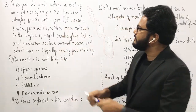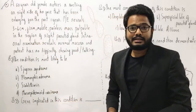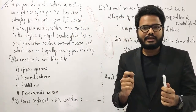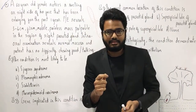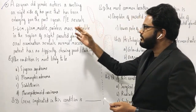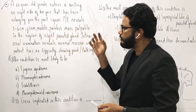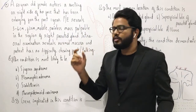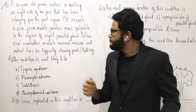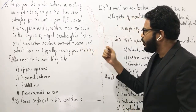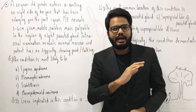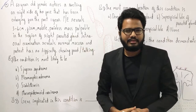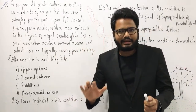So as you can see, a 60-year-old female notices a swelling on the right side of her face that has been enlarging for the last one year. Physical examination reveals a three to four centimeter firm, mobile, painless mass palpable in the region of the right parotid gland. Intraoral examination reveals normal mucosa, and the patient has no difficulty in chewing, mastication, or talking. This condition is most likely to be?